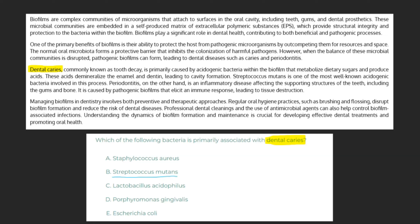b. Streptococcus mutans. As the text tells us, Streptococcus mutans is one of the most well-known acidogenic bacteria involved in this process — the process in question being the formation of dental caries. Based on this, we can mark b. Streptococcus mutans as our final answer.